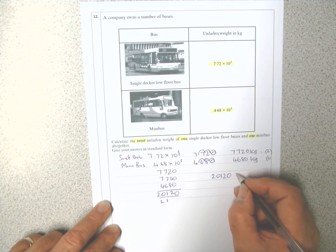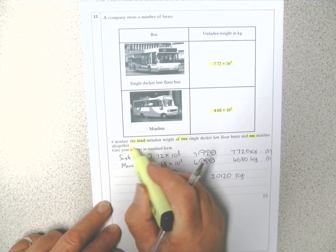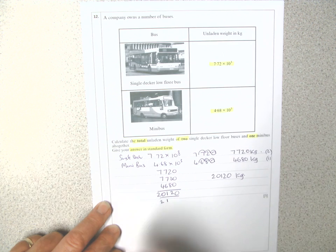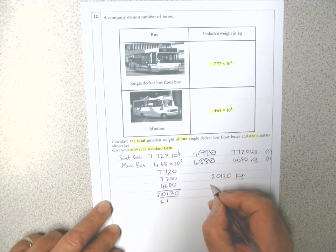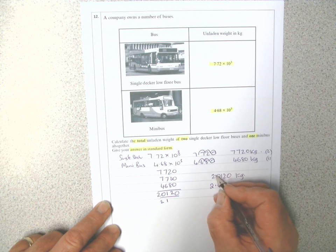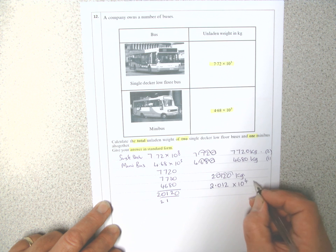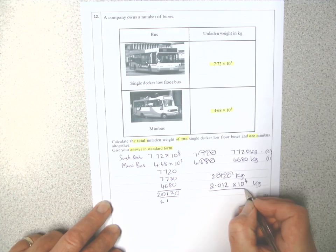The weight is 21,200 kilograms, but the question wants the answer in standard form. So it's going to be 2.012—I put the point there, and I've moved one, two, three, four places. That's 2.012 times 10 to the 4 kilograms.